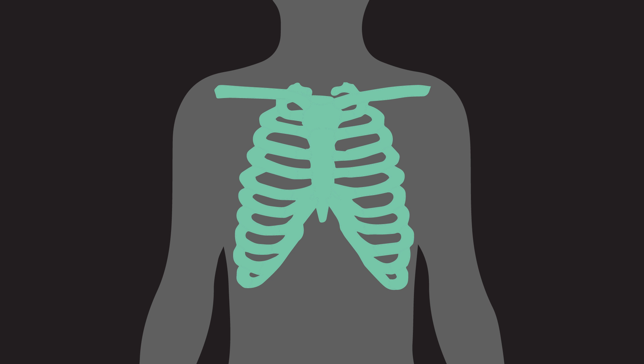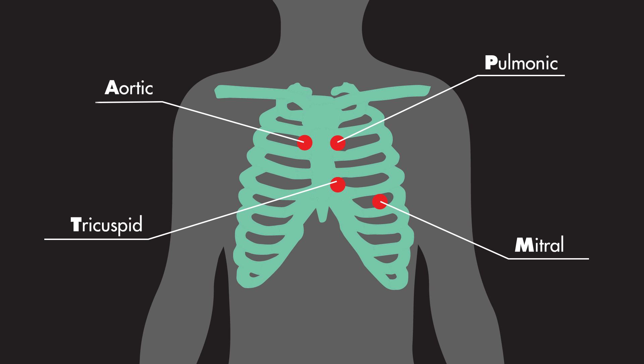These are the aortic valve, the pulmonic valve, the tricuspid valve, and finally the mitral valve. The letters in the mnemonic Apartment M stand for the first letter of each valve: A for aortic, P for pulmonic, T for tricuspid, and M for mitral.